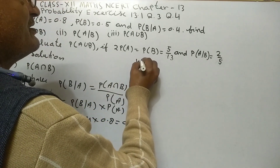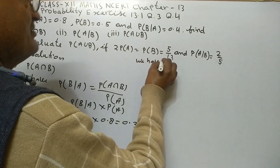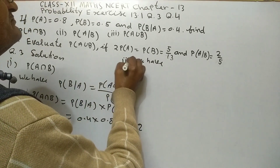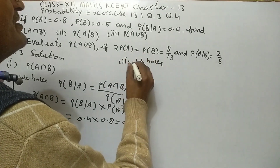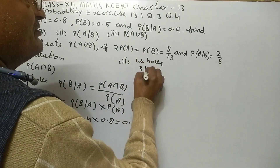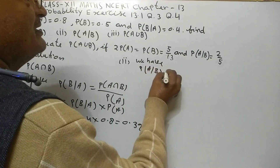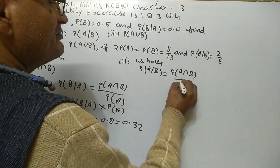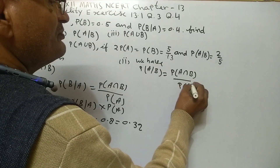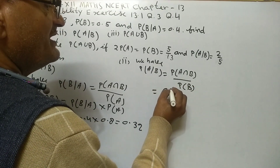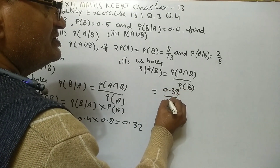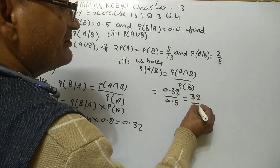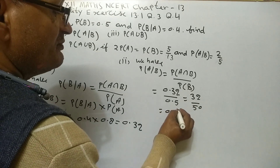Second part: probability of A given B equals probability of A intersection B upon probability of B, equal 0.32 upon 0.5, equal 32 upon 50, equal 0.64.